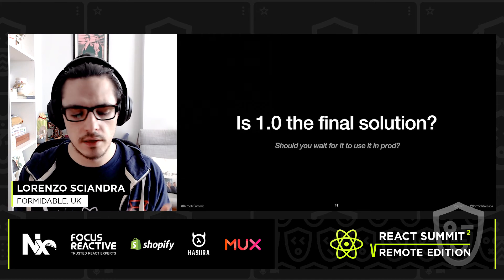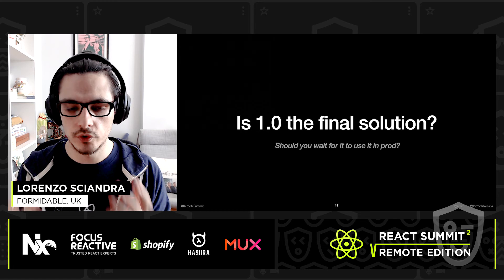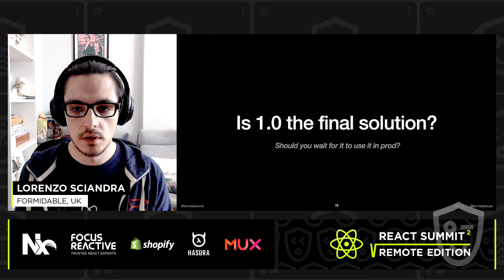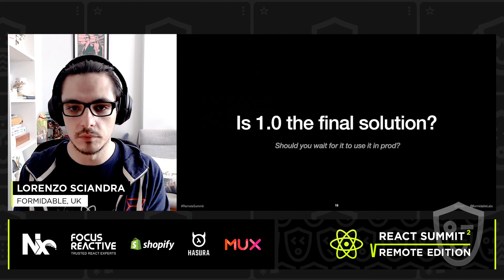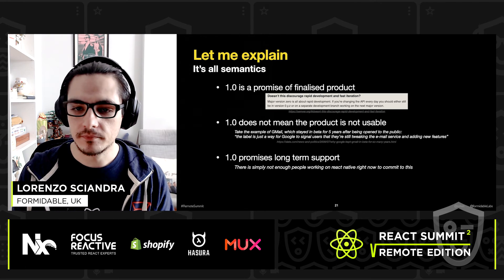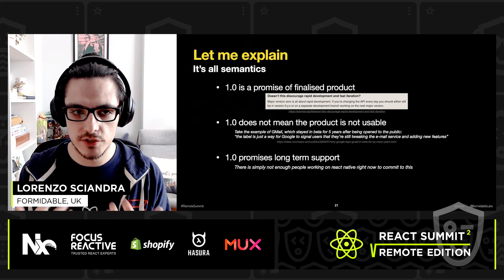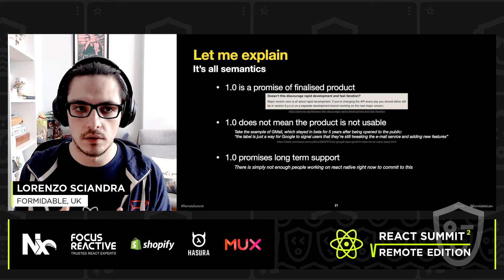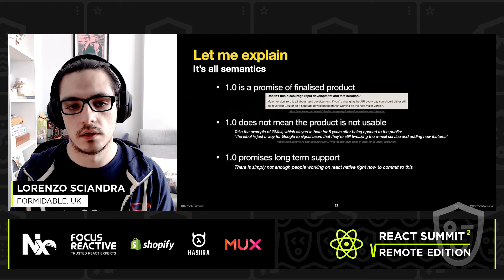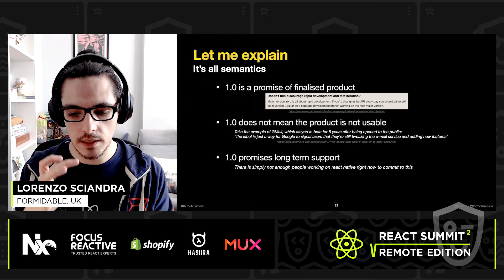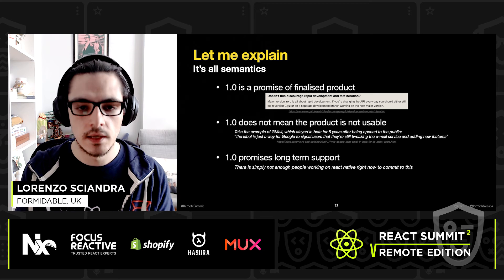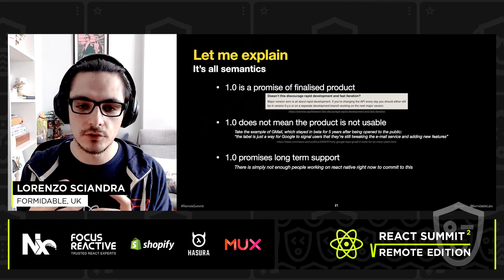That said, let's go back to the title of my talk. I'm sure by now you're thinking: yeah, it's complicated, but wouldn't 1.0 be the final solution? Wouldn't having version 1.0 fix all my problems? Should I wait for 1.0 to use React Native in production? My answer is a clear no. You see, 1.0 per se is just semantics — 1.0 is a promise of having a finalized product.